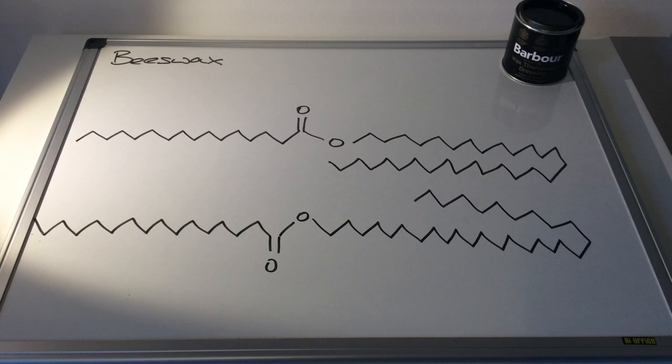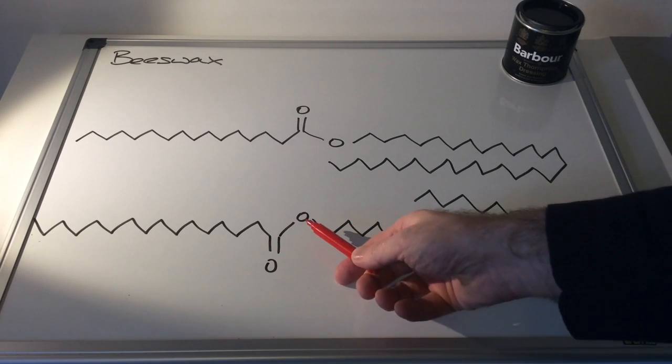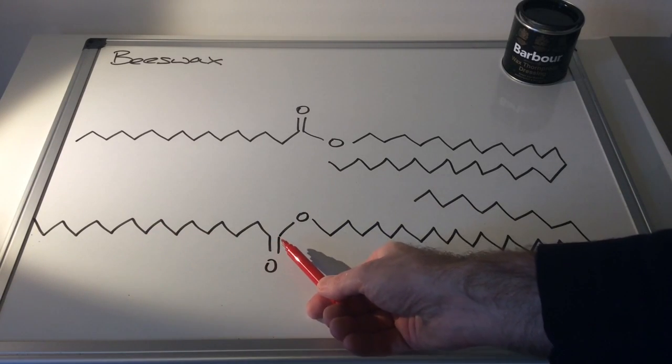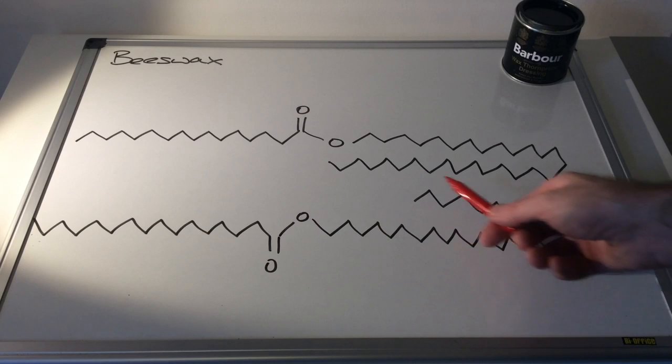For the purpose of the video, I'm going to use beeswax as my example of a wax molecule. Beeswax is a natural wax molecule, and on the board there I've drawn two identical wax molecules that would be like the ones found in beeswax. You can see the functional group in the molecule there—these are actually esters, and they are esters of very long carboxylic acids and even longer alcohols.